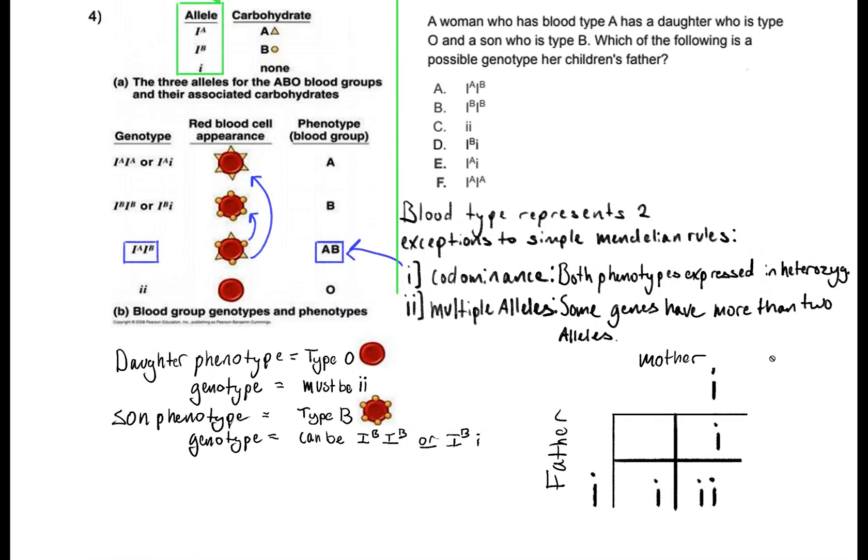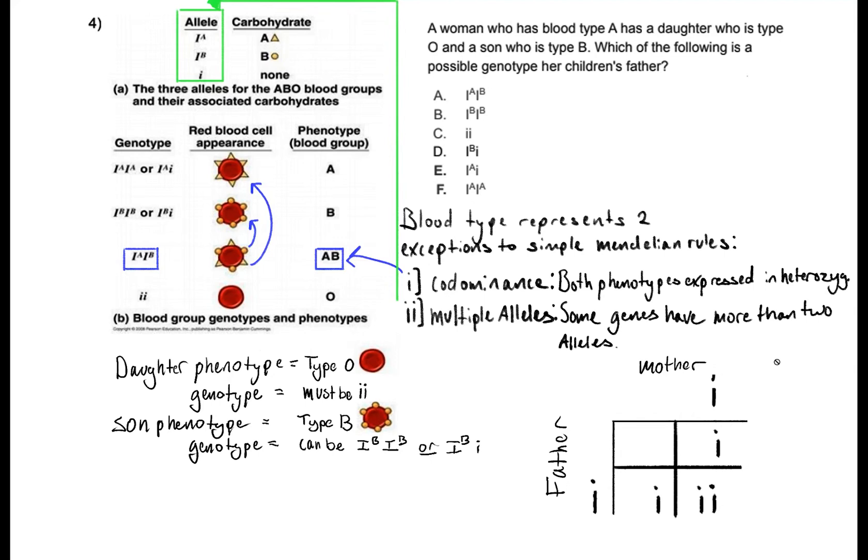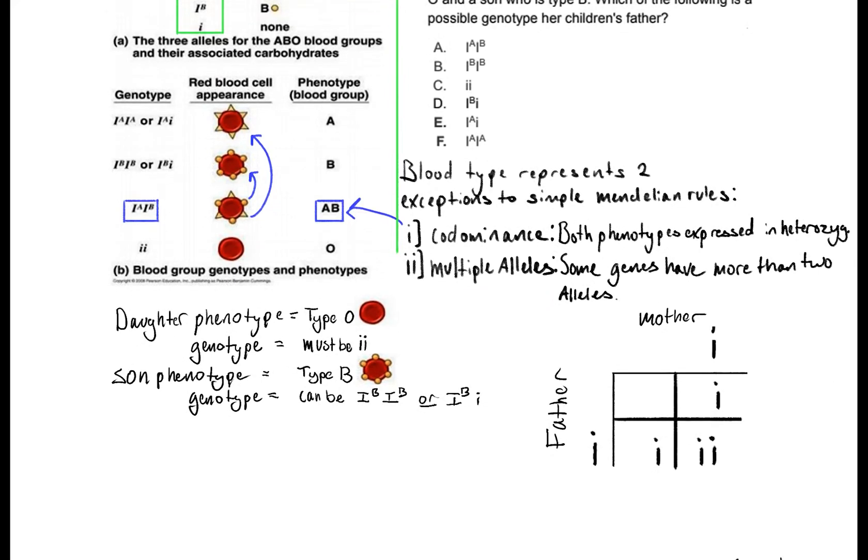The problem states that our mother has blood type A so we can immediately deduce that the remaining allele for the mother is going to be IA. So our mother's genotype is IA, little i and then we can kind of carry that down we have IA in this Punnett box and IA, little i in that Punnett box.